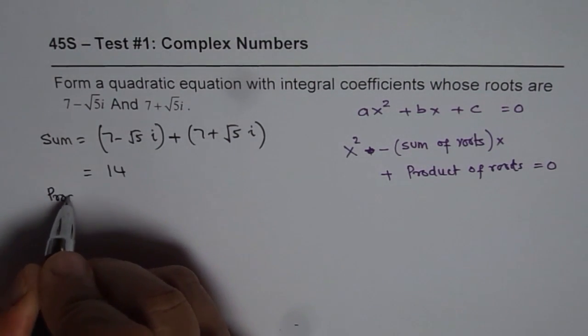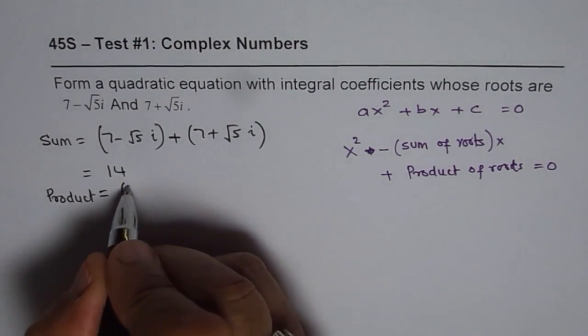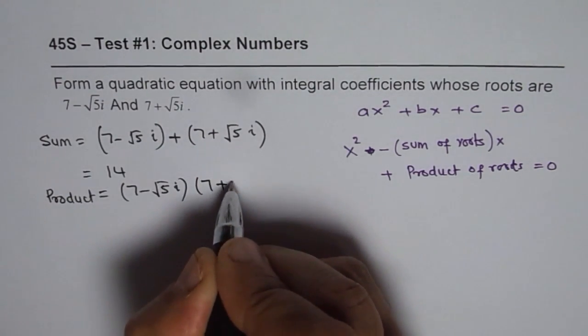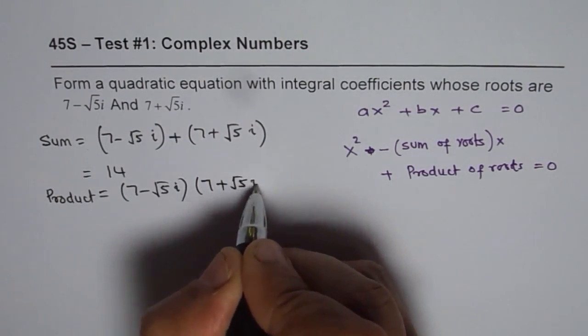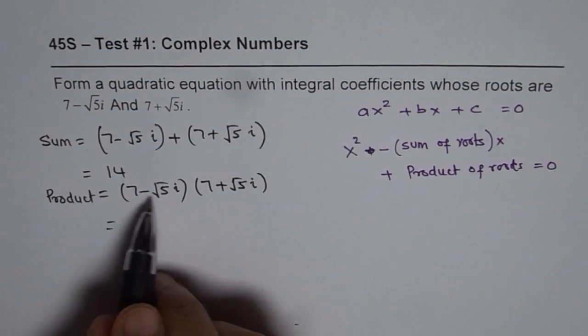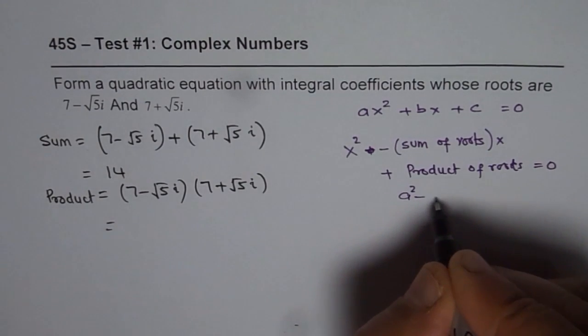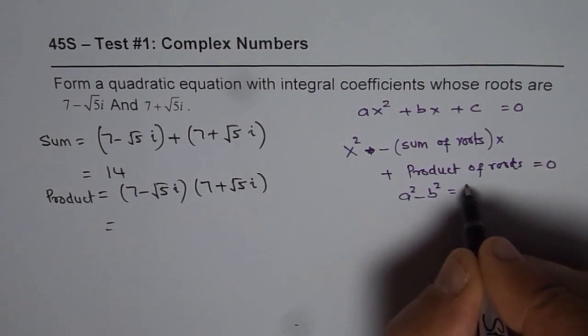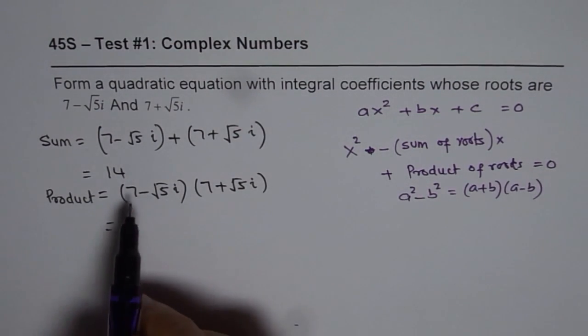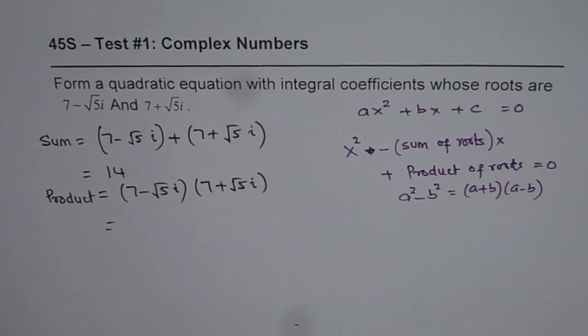Now let us find the product. So product in this case is equal to 7 minus square root 5i times 7 plus square root 5i. When you multiply, this is sum and difference, so we can apply the formula a square minus b square equals a plus b times a minus b. Here we are given a minus b times a plus b, so it should be a square minus b square.